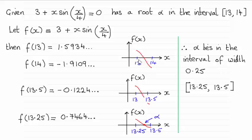So then we cut this interval in half. That means I'm looking at a new value for x, 13.5. And when we do f of 13.5, this time it comes out as a negative value, negative 0.1224 and so on. So now I know that the root alpha lies somewhere in this interval between 13 and 13.5.